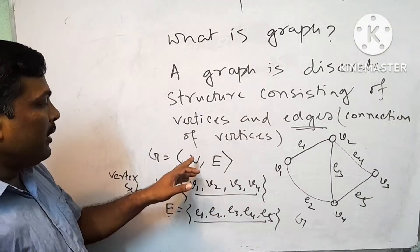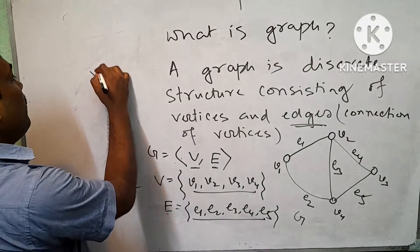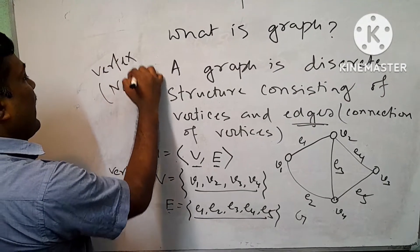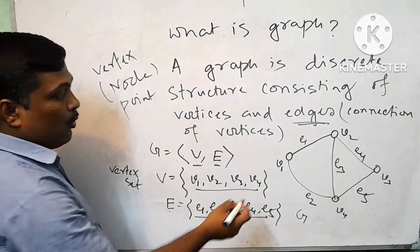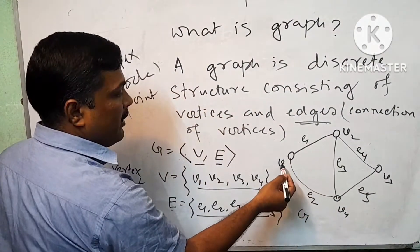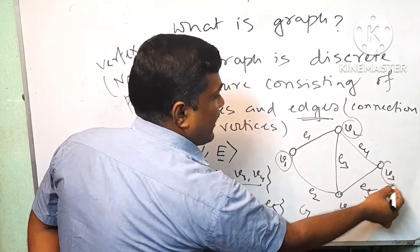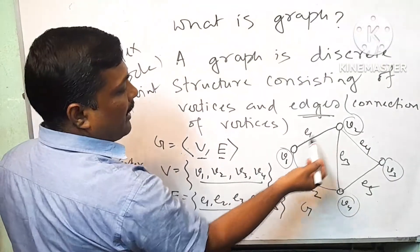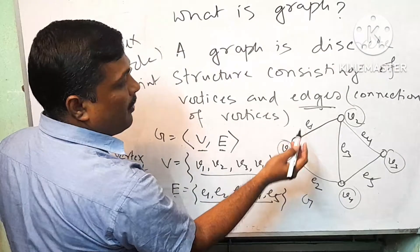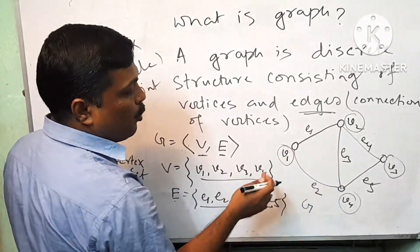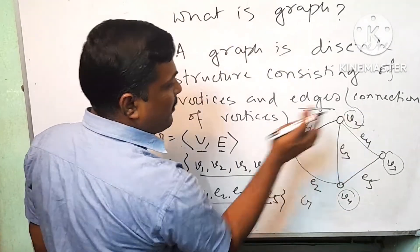We write G equals to (V, E), where V is the vertex set and E is the edge set. Now in a graph, a vertex can also be called a node or point. Edge E1 means the connection between vertices V1 and V2. So E1 has two end vertices, V1 and V2. These are the end vertices of edge E1.